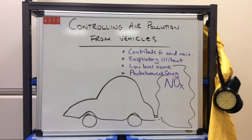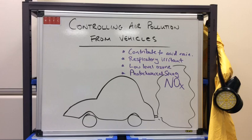We'll now take each of these emissions in turn and discuss why they are bad. Nitrogen oxides can get into the atmosphere and mix with rainwater to form nitric acid, which falls back to the ground as acid rain. Nitrogen oxides are also classed as respiratory irritants — they cause problems for people with breathing difficulties and exacerbate conditions like asthma. They also cause low-level ozone and contribute to photochemical smog.